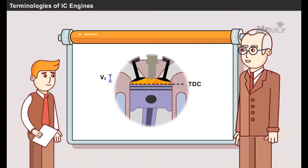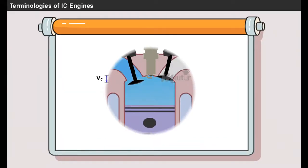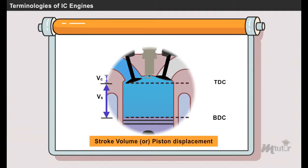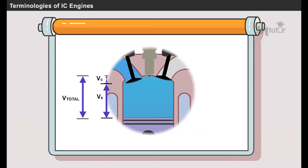The volume swept through by the piston between top dead center and bottom dead center is called swept volume. It is also called as piston displacement. Total volume is equal to the sum of swept volume and clearance volume.